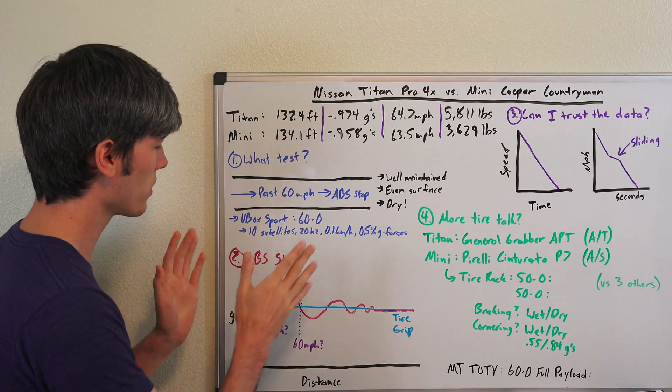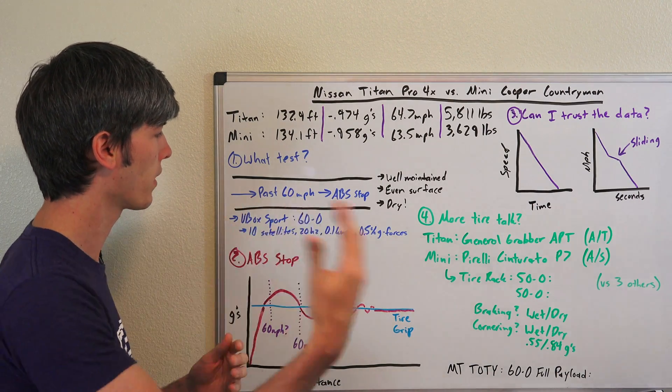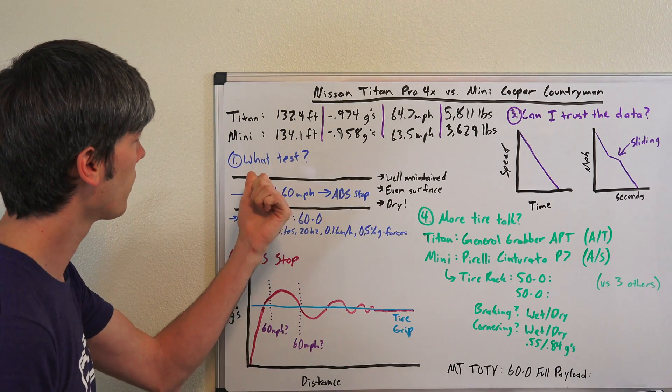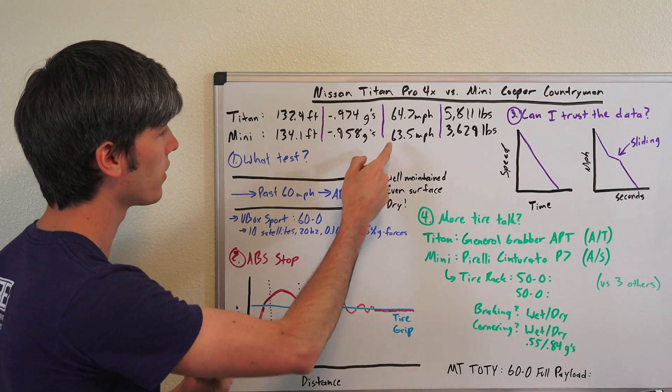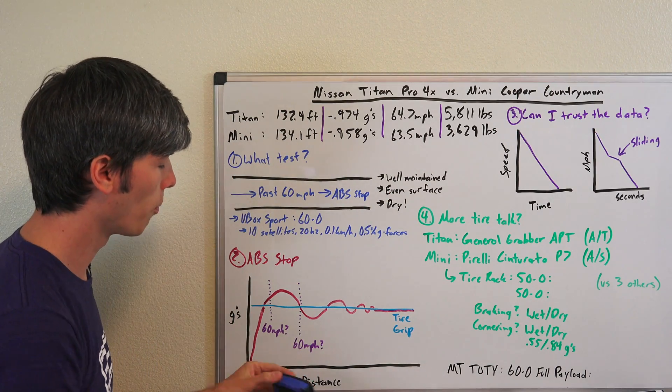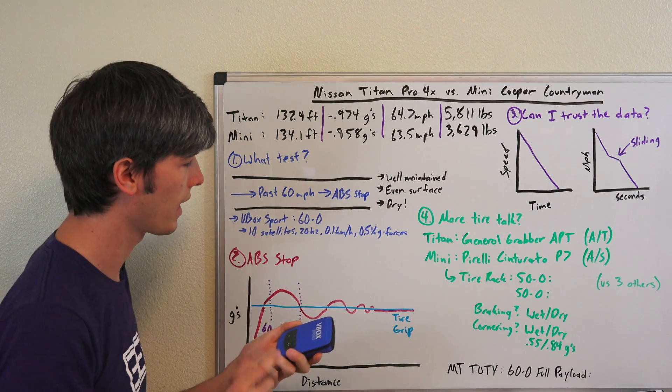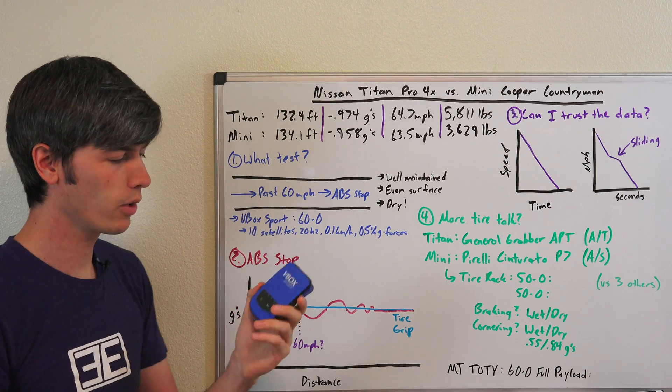There's a reason why I do that. I'll get into why I go past 60 miles per hour. In the Titan I accelerated up to 64.7, in the Mini I was at 63.5.